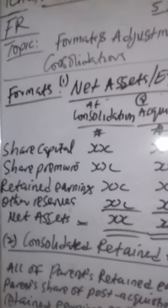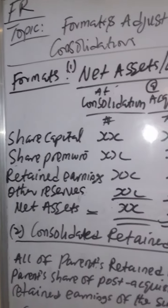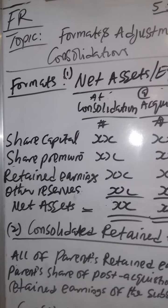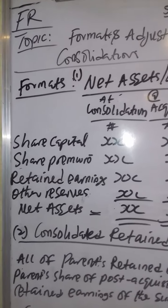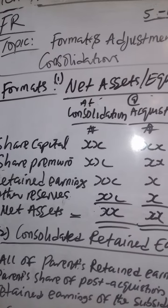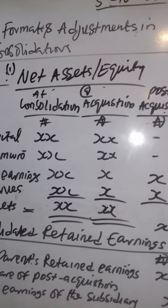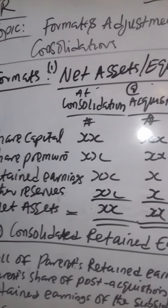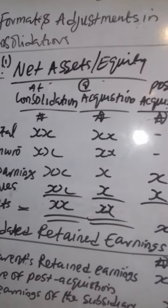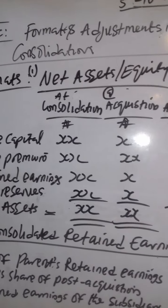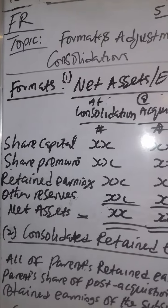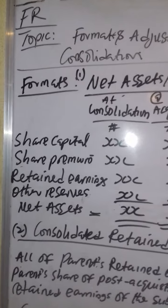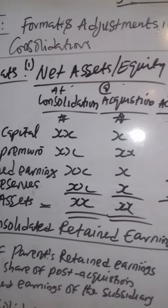You need to look at the subsidiary that you are acquiring: the share capital of the subsidiary, the share premium, retained earnings, and all the reserves - and the total net assets. You are going to deduct the value at acquisition from the value at consolidation. Normally, share capital remains constant and share premium also remains constant.